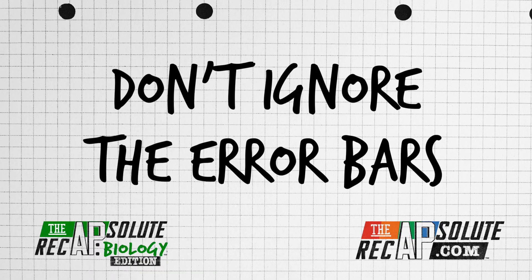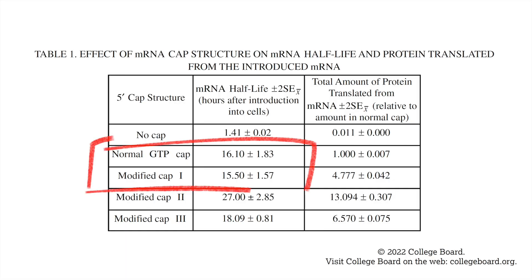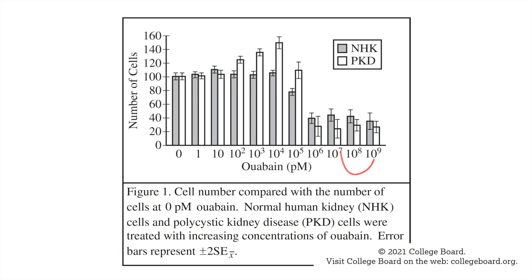Number one: don't ignore the error bars. The error bars are there for a reason. Essentially, they represent how spread out all of the data points are from the average. So when you are asked to compare variable groups, look at their error bars. If they're overlapping, then your answer must say that there is no statistical difference between groups.